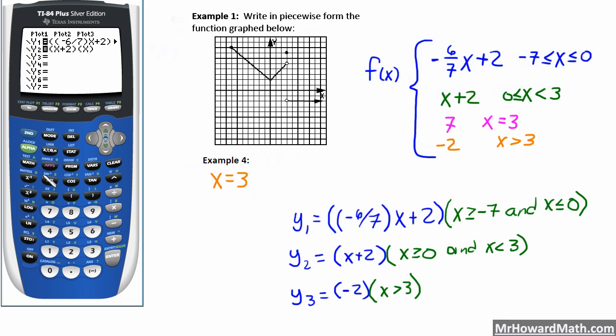All right, so we want x is greater than or equal to, second math, greater than or equal to is option 4, greater than or equal to 0. So second math for the test, we'll go over to logic to get the and.